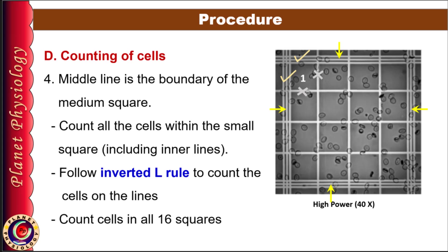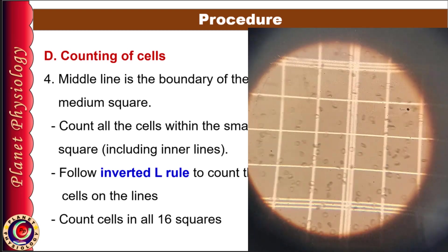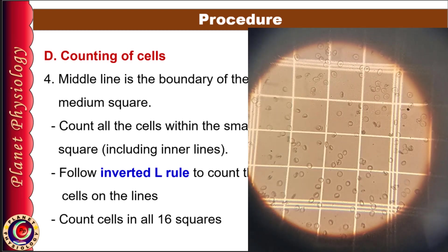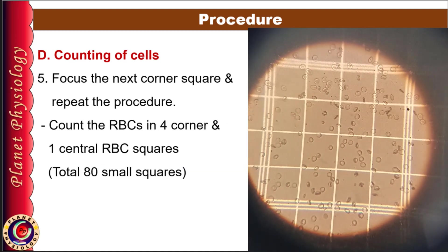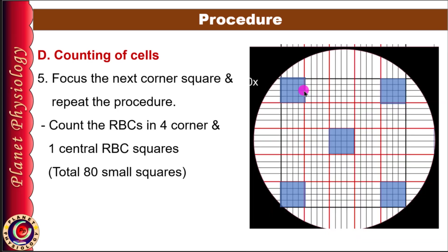Now observe the second square in the top row and repeat the procedure. In this case there are 4 cells within the square and 3 on the upper and left borders, so again the count for this box is 7. Note it down. Repeat this procedure for all 16 squares. Then move to the next corner and repeat the process. In the same way you are going to count the cells in 4 corner RBC squares and 1 central RBC square. Thus you are counting the cells in 80 small RBC squares.